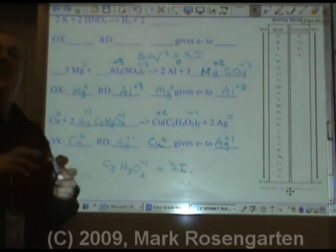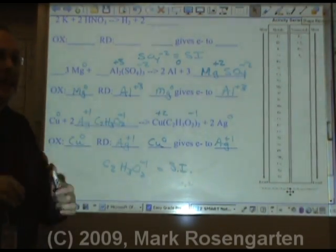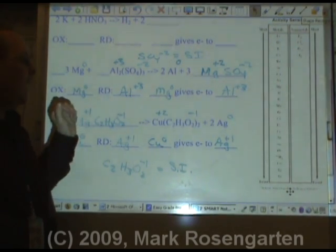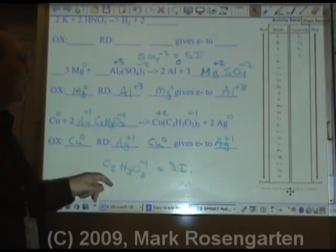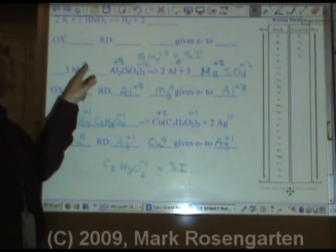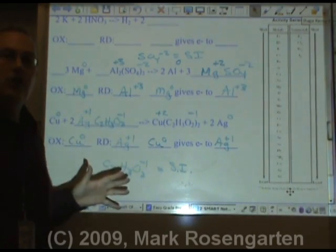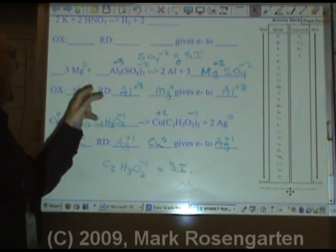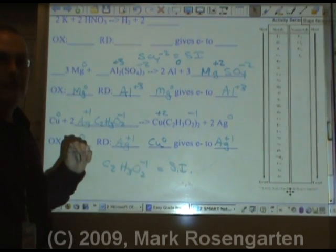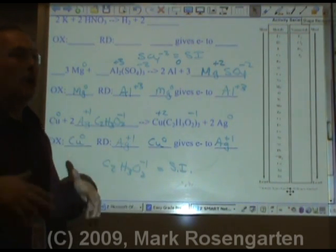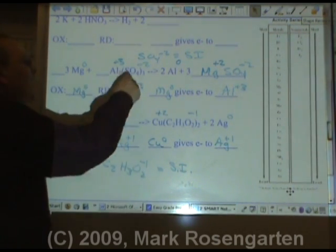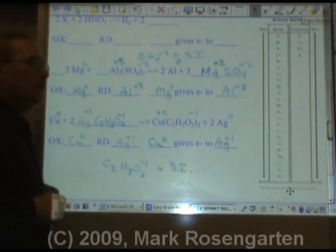I cannot stress enough how important it is when you're asked what species is oxidized and what species is reduced and what species is the spectator ion, you must put the charge in. Without the charge, it means nothing. You have to have the charge there. So anytime you're asked about anybody who's oxidized or reduced, you must put in the charge of the oxidized and reduced species.